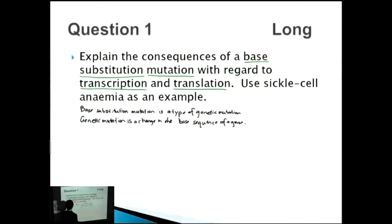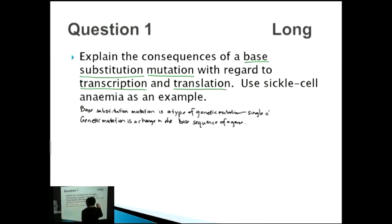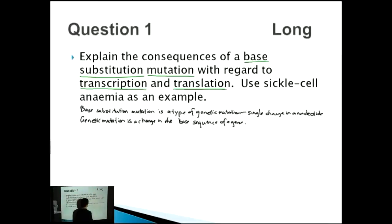Going back to a base substitution mutation specifically — that's when there's a single change in a nucleotide. So there's just one change; it might go from an A to a T, or from a C to an A, or a G to an A, etc. That's our first definition covering base substitution mutation and what it is.